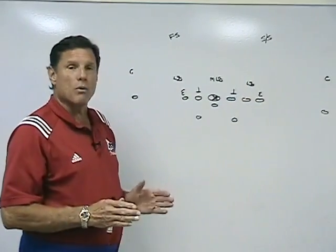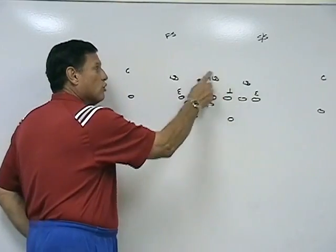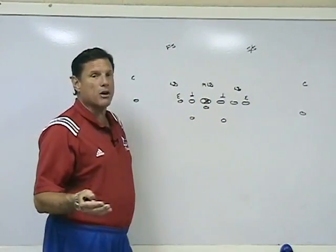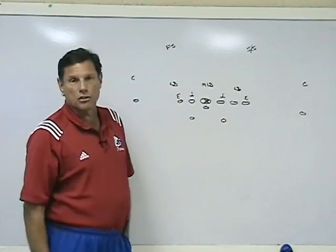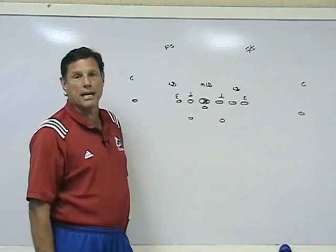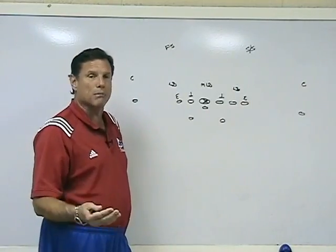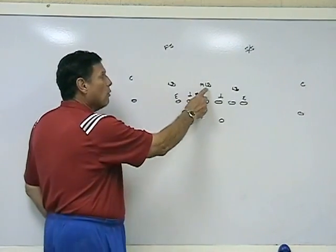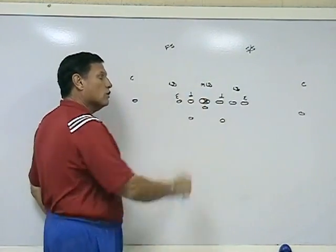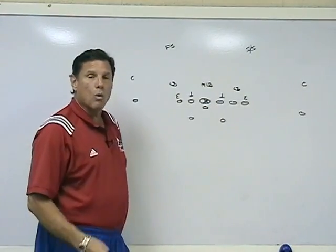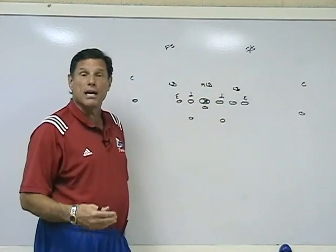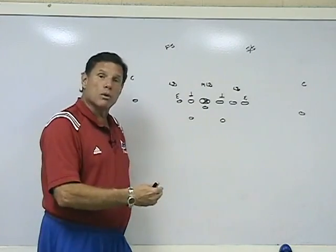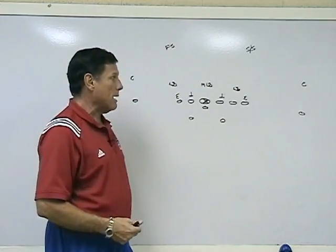The other thing we try to do is find a way to control the middle linebacker. The middle linebacker in a 4-3 is usually the stud — the guy that makes the big hit, probably the best run player on the defense. So we need to find a way to control that middle linebacker with our play, not only in our option, but also with a complementary play off of our option.